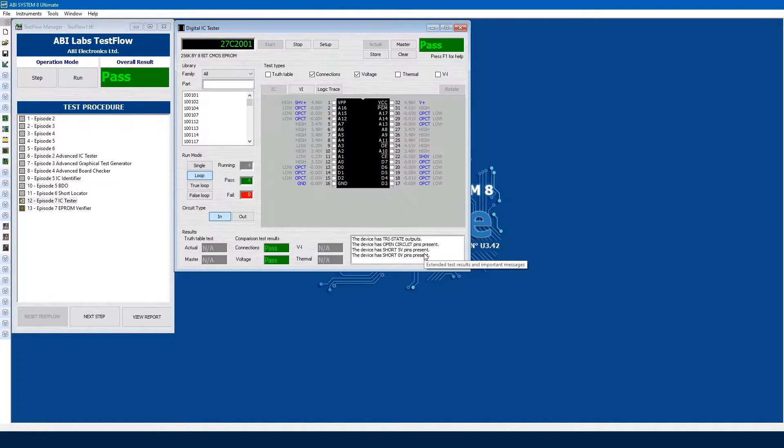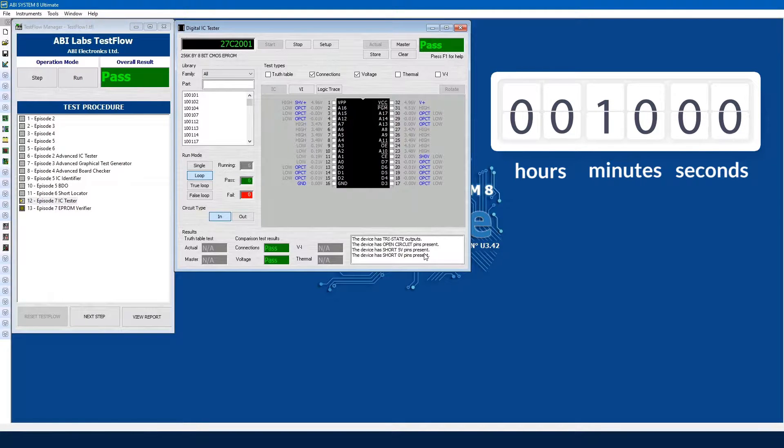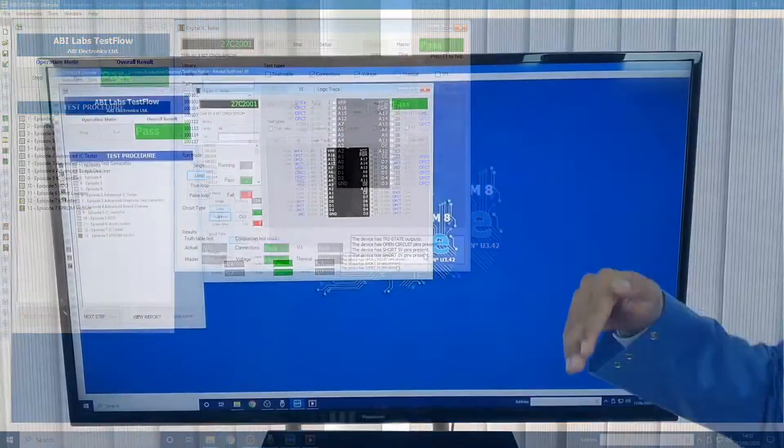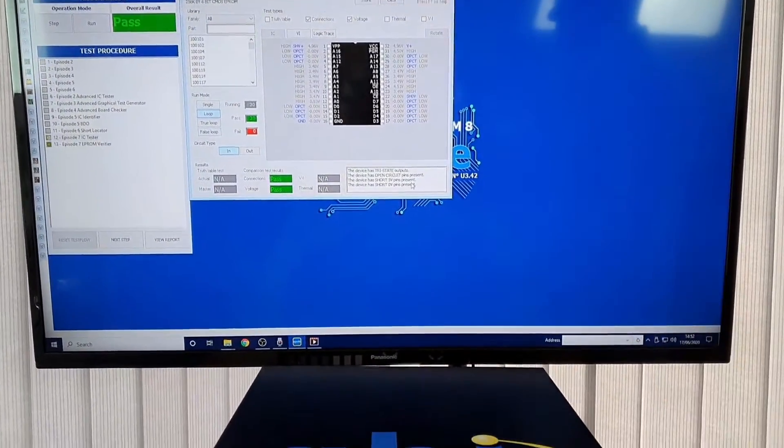We can also test the functionality of the device. However, that will take a long time. But for this demonstration, we'll be looking at the connection and voltage test. As you can see, the system has already very quickly identified all our open circuits, our VCC, our ground, our highs and lows. We can also see all the voltages as well. And we don't have any incoming signals disrupting our EEPROM.